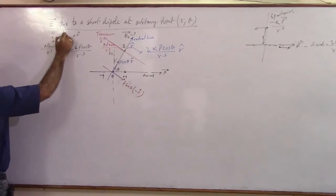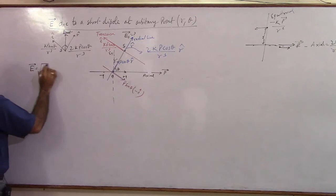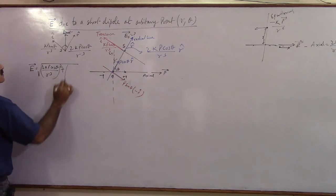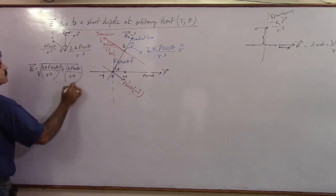So what will be the resultant of these two? You will say simple, this is your E net, and how much will that be equal to? E will be equal to under root of 2K P cos theta by R cube whole square plus K P sin theta by R cube square.